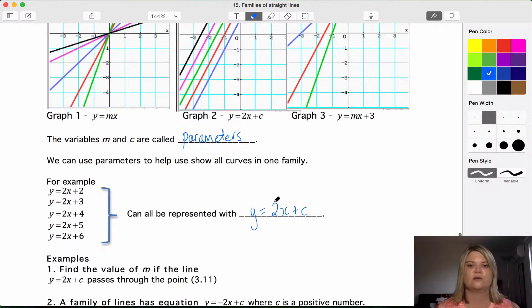Parameter is different to the two variables that we're using, x and y. These are the two ones that we are graphing, our x-axis and our y-axis. The parameter changes independently of those two variables.